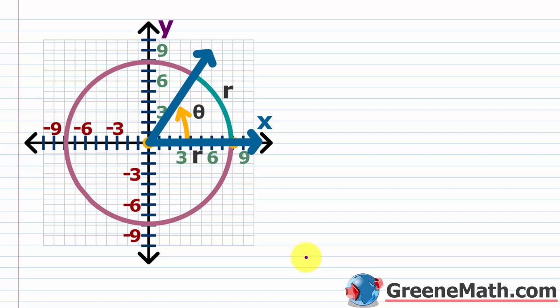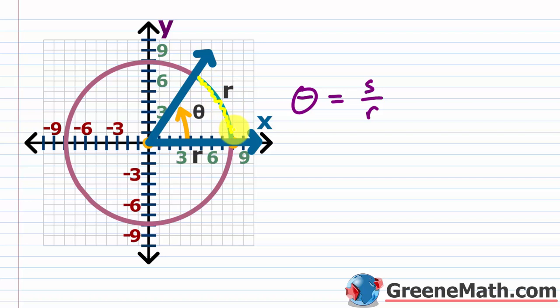Let's recap what we learned in the last lesson. If our angle theta is a central angle of a circle of radius r, and theta intercepts an arc of length s, then we can obtain our radian measure of theta as theta equals s over r. In this first example, if the arc length equals r exactly, then r over r equals 1, so the measure of your angle theta in this case is 1 radian.